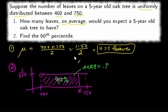So if we go ahead and calculate, then we can set up an equation. The area is width times height, 1 over 350, and the width is x minus 400. x minus 400. And that needs to be 0.9.